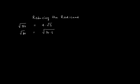And so radical 80 and radical 16 times 5 is the same thing. So they're equal to each other. And using the properties of radicals, I can split what's underneath the square root here as the square root of 16 times the square root of 5.